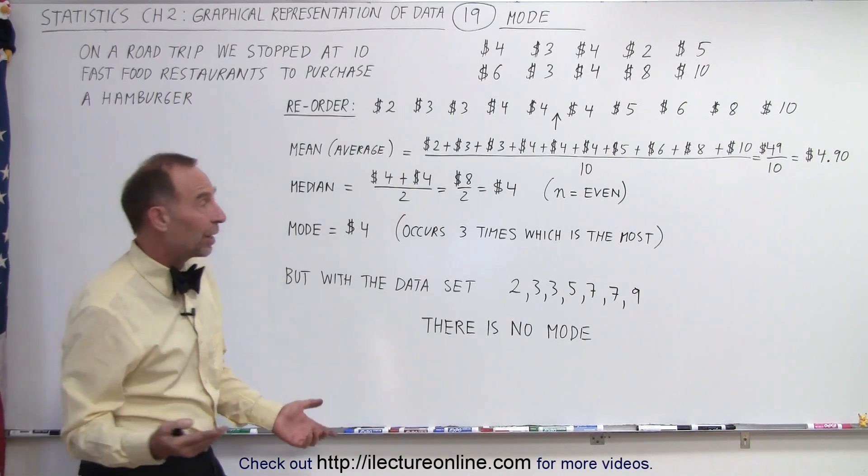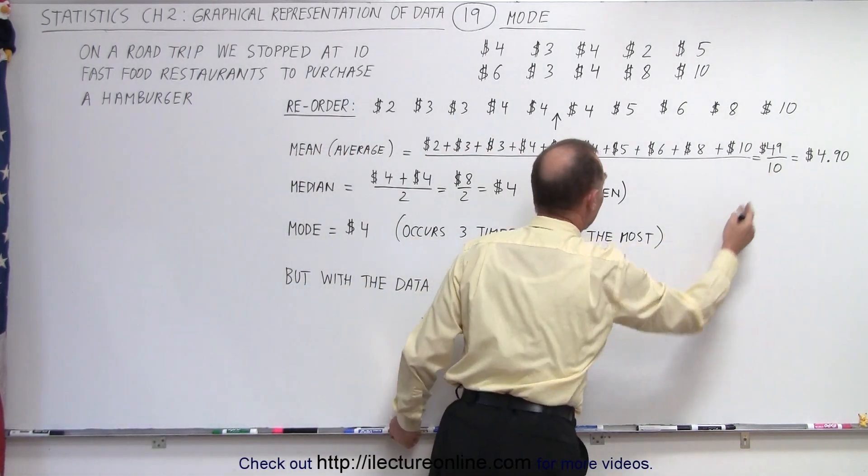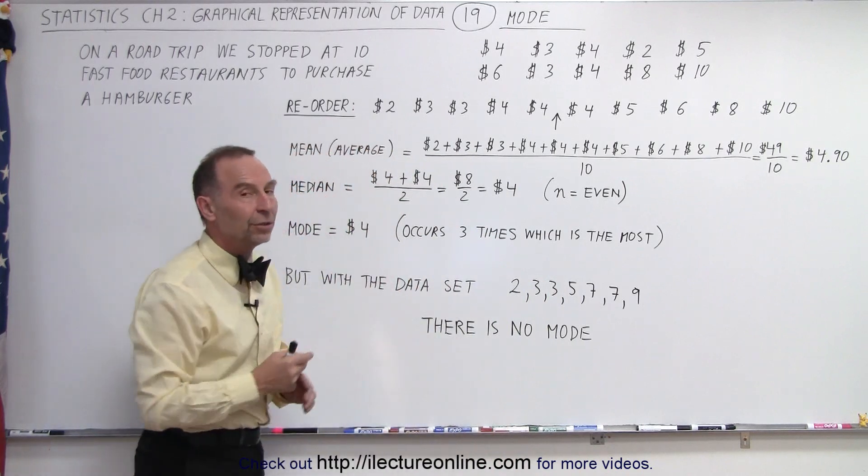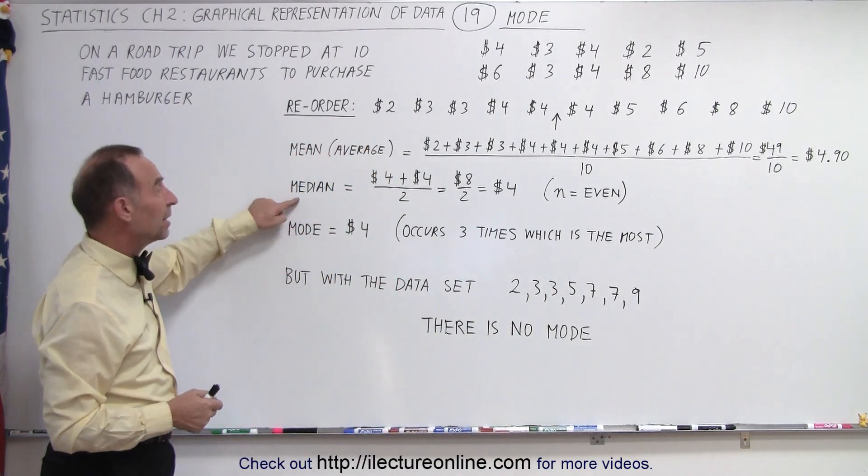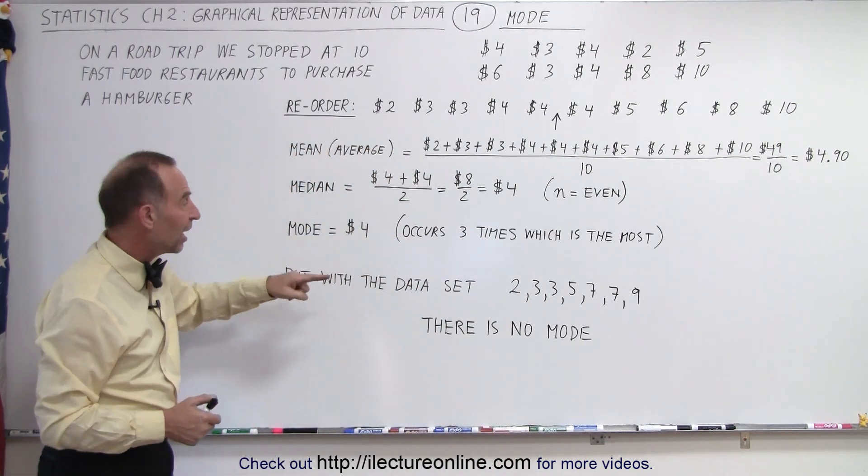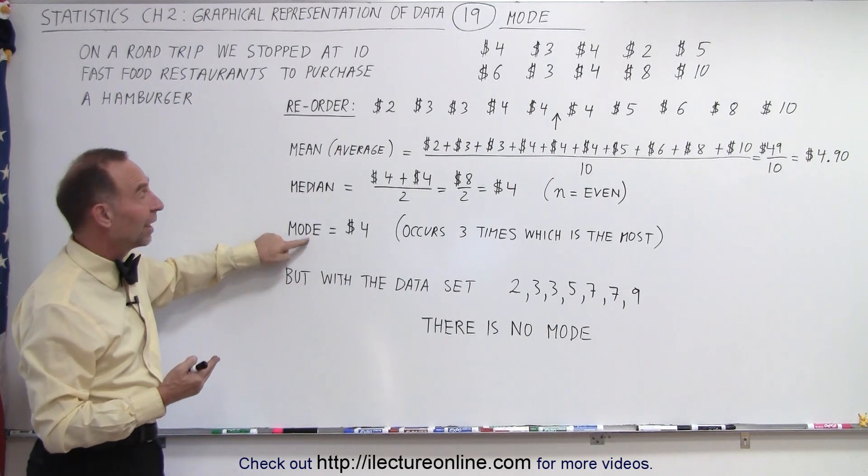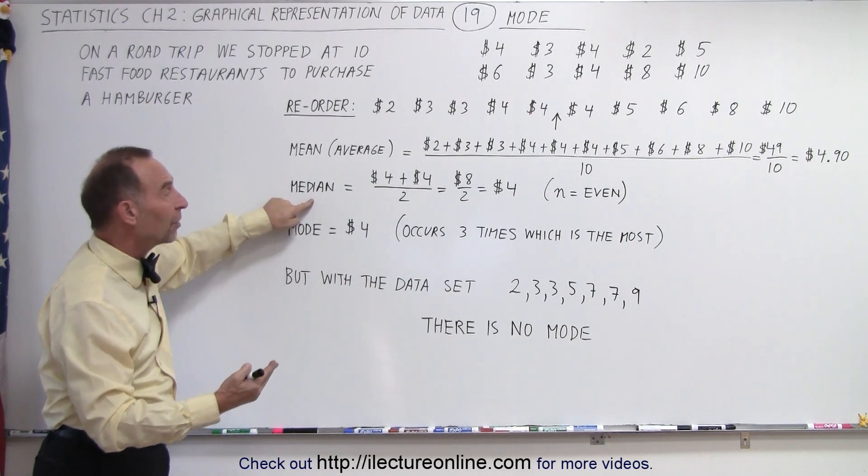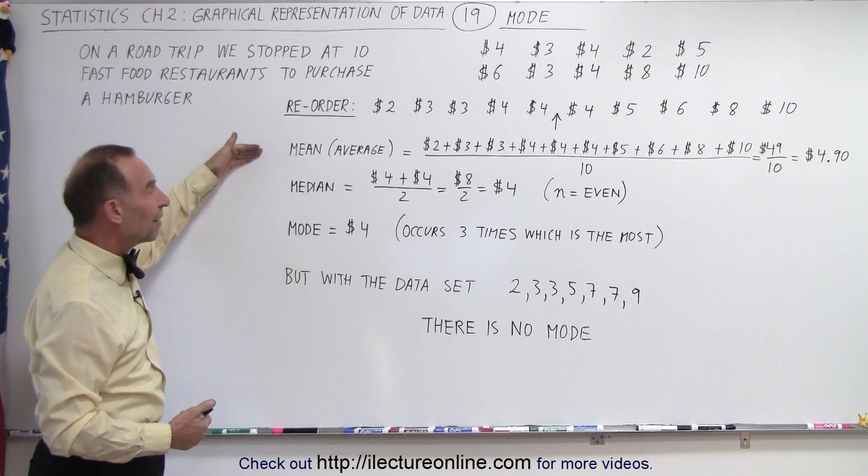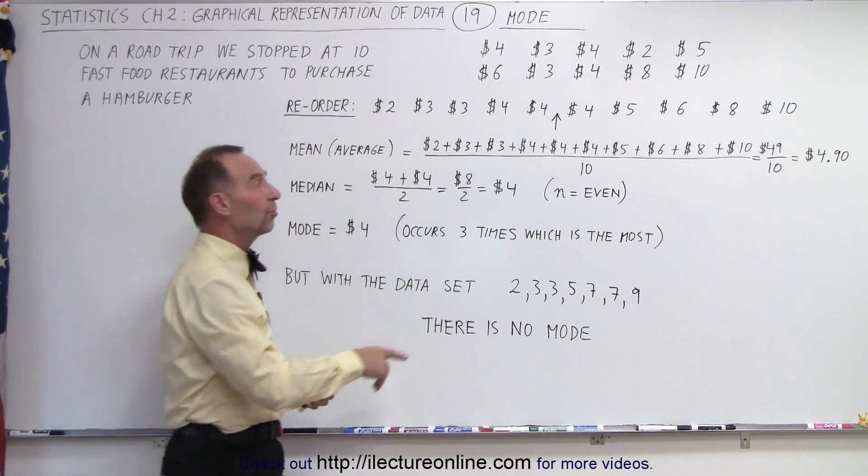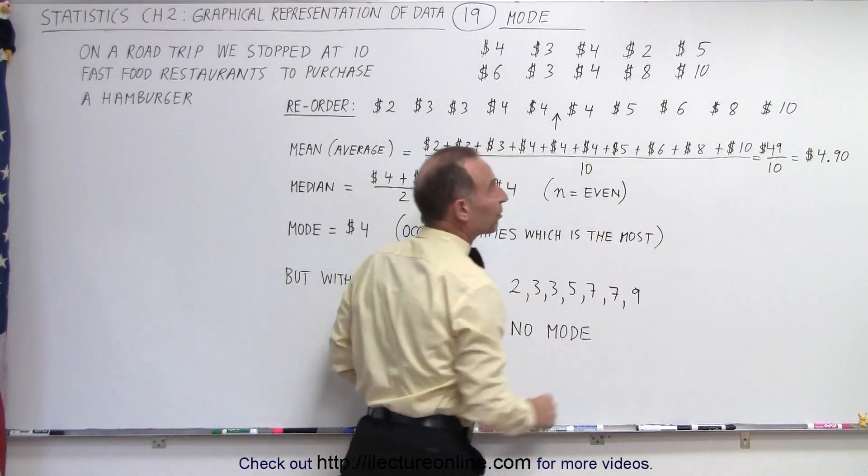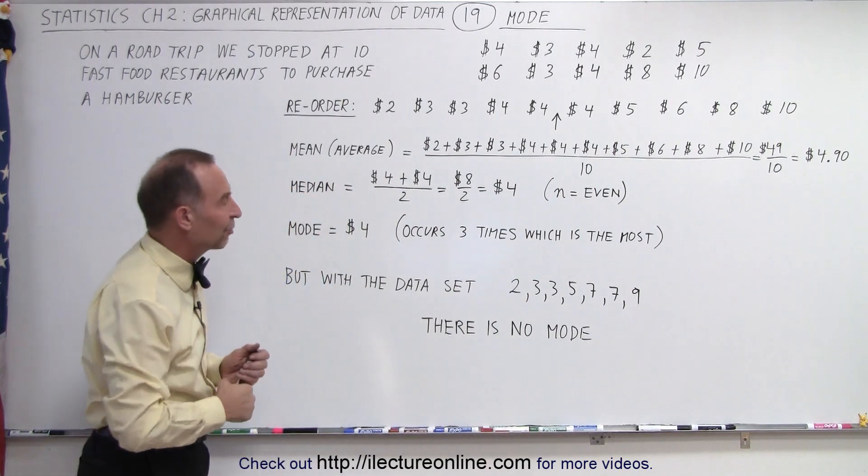The average price was $4.90, and notice that the middle value, the median, was four dollars. So in this case, the most likely cost and the typical cost is four dollars. The average cost is $4.90 because there were some burger places that were rather expensive that kind of raised the average price up somewhat.